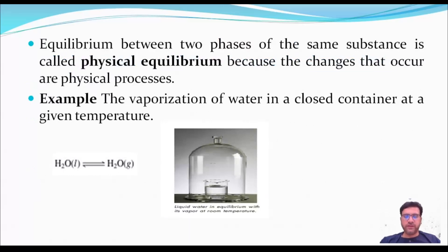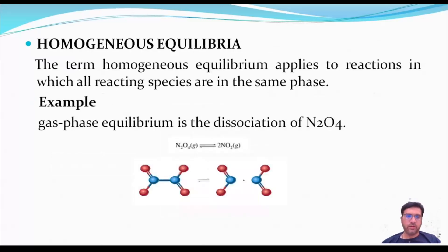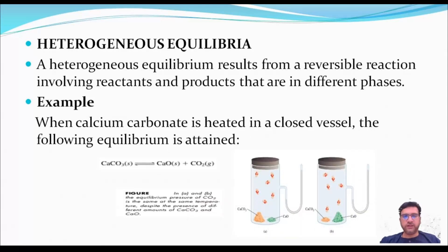Equilibrium between two phases of the same substance is known as physical equilibrium — for example, the vaporization of water in a closed container at a given temperature. Homogeneous equilibria applies to reactions in which all reacting species are in the same phase, for example the dissociation of dinitrogen tetroxide into nitrogen dioxide. Heterogeneous equilibria result from reversible reactions involving reactants and products in different phases, for example the production of lime from limestone.